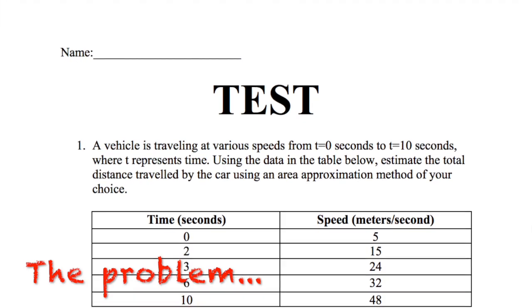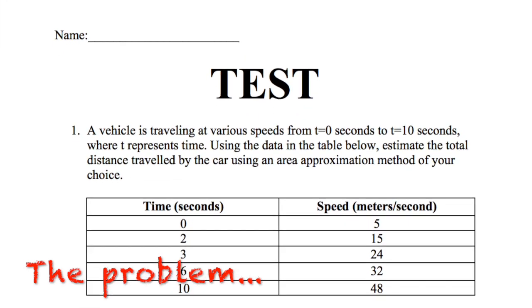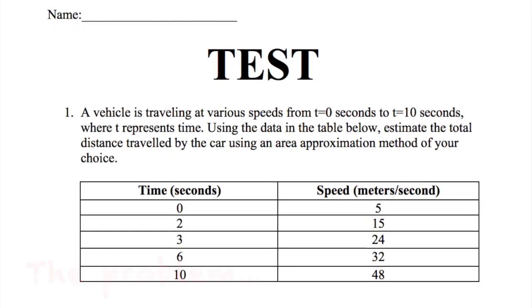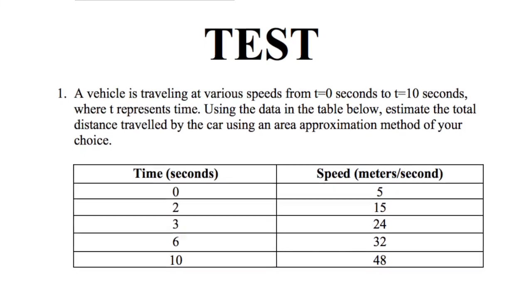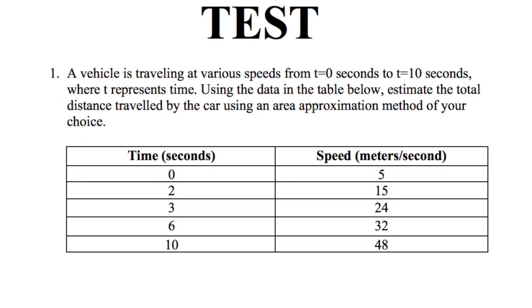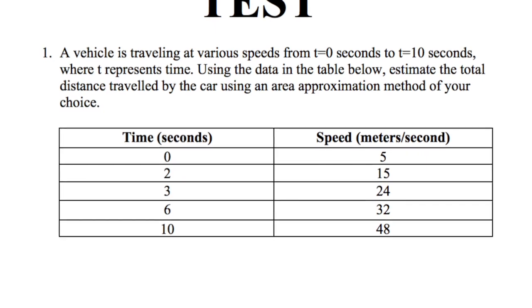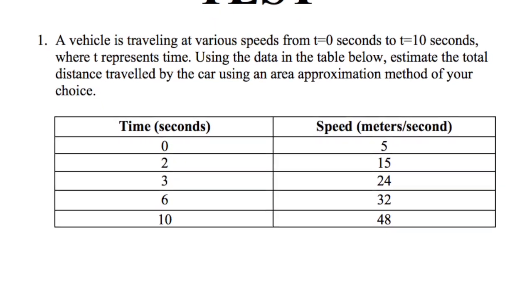A vehicle is traveling at various speeds from t equals 0 seconds to t equals 10 seconds where t represents time. Using the data in the table below, estimate the total distance traveled by the car using an area approximation method of your choice.